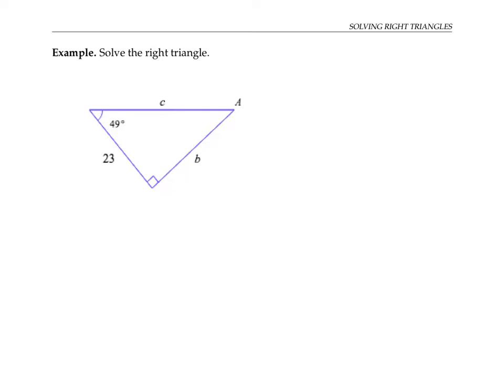To find the measure of angle A, let's use the fact that the measures of the three angles of a triangle add up to 180 degrees. So that means that 49 degrees plus 90 degrees plus A is equal to 180 degrees. So A is equal to 180 degrees minus 90 degrees minus 49 degrees, which works out to 41 degrees.